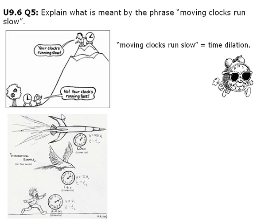For example, a clock in a moving aircraft would be seen to run slow if observed by an observer on the ground.